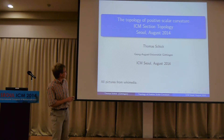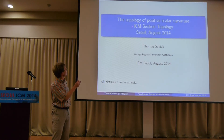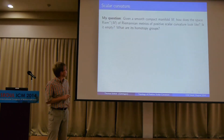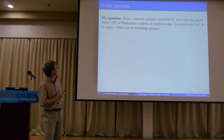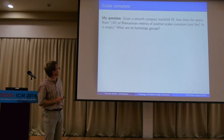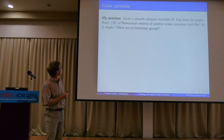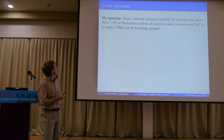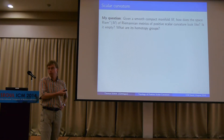I have to admit that I hijacked the topology section, so a lot of what I'm doing is actually not so much about topology but maybe more geometry applied to topology. The question I want to discuss today: taking a smooth compact manifold M without boundary, I'm asking how the space of metrics of positive scalar curvature looks. This is a topological space — a subspace of the space of all metrics — and it could be empty. If it's non-empty, it's interesting to know what the homotopy groups of the components are.